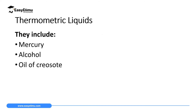There are three thermometric liquids which are commonly used. The first one is mercury. The second one is alcohol. The third one is oil of turpentine. We are going to study mercury and alcohol in detail — their similarities and their differences.